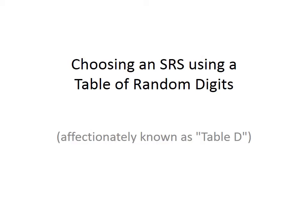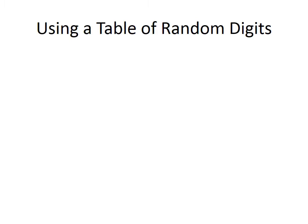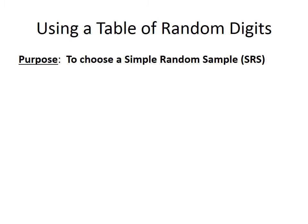The whole purpose of this video is to show you how to choose a simple random sample using a table of random digits, or Table B as it's known in our textbook. The entire purpose of using the table of random digits is to make sure that we can choose a simple random sample in a correct way.